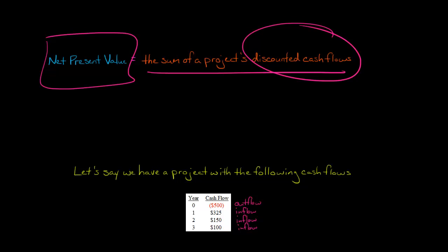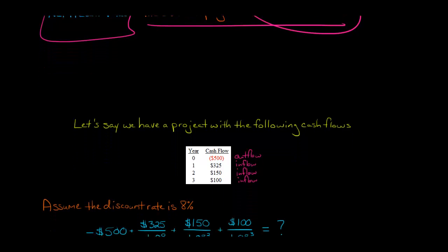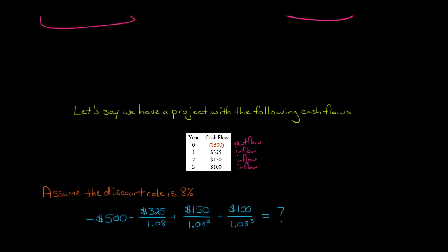We're going to discount these to the present value. We need to know the discount rate that the company is going to use for this project, so let's just say that it's 8%. If that's the case, then we would take negative $500. It's negative because it's a cash outflow, and it's $500 because we don't have to discount. When we pay out cash today, we don't have to discount into the present value because $500 paid today is $500 paid today.